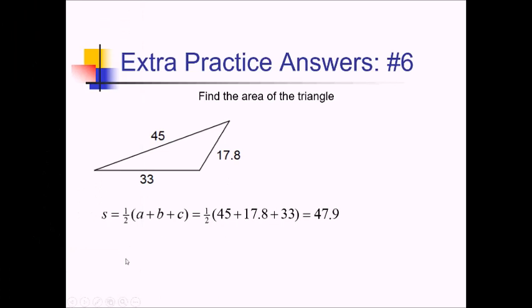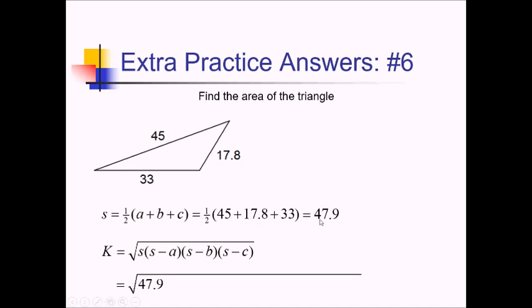So now our K formula that actually gives us the area, that again is going to be the square root of S and S minus all three sides multiplied together. So we've got square root of 47.9 and then 47.9 minus 45. And then we're going to be subtracting 17.8 and 33 from 47.9.